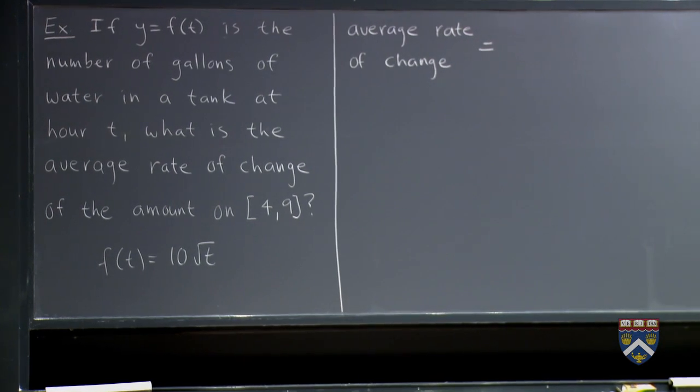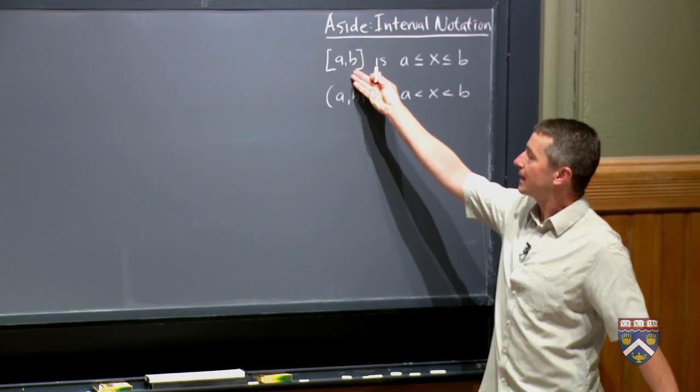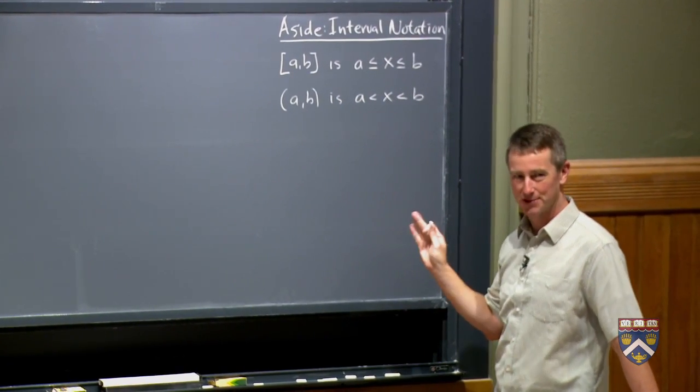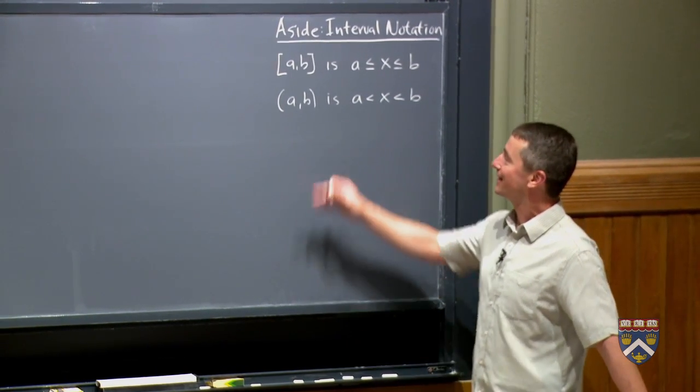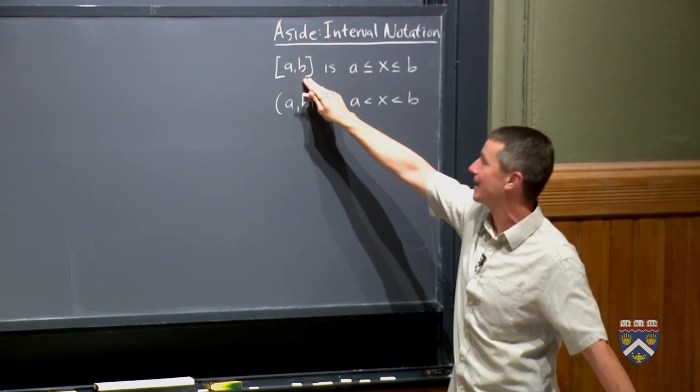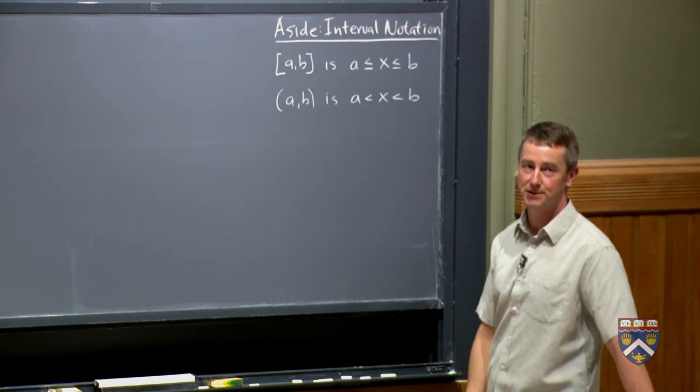So we have a brief little aside over here to explain how interval notation works. When we put the a and the b in brackets, these square ones, different countries call these different things. So if you're watching from some other part of the world, you might not call these brackets. But in this country, we call them brackets. This means that the endpoints are included. So bracket a comma b close bracket means a less than or equal to x less than or equal to b.